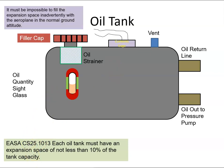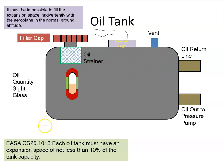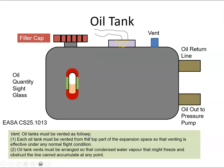That expansion space must be impossible to fill inadvertently with the airplane in the normal ground attitude. You should not be able to fill that space — there must be some safety mechanism there.